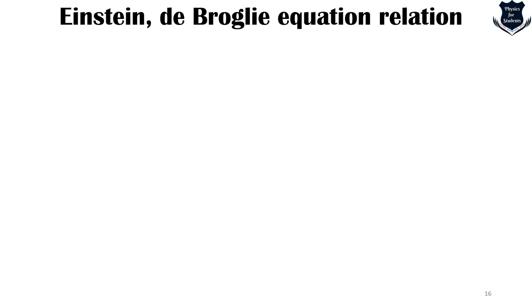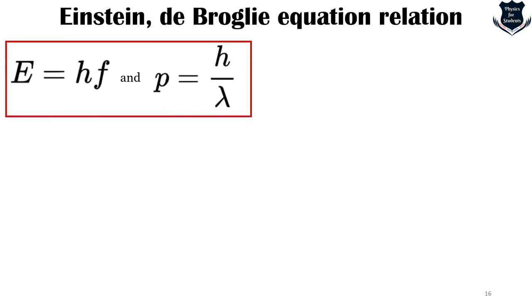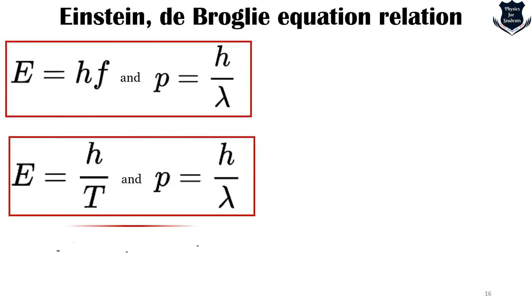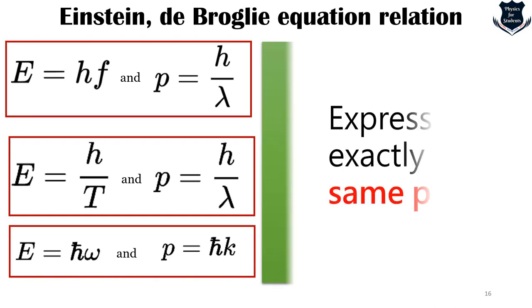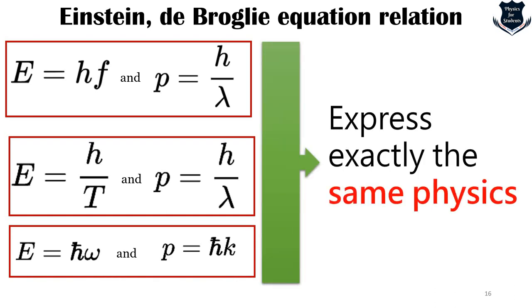What we get from here is that E equals hf, p equals h upon lambda, E equals h upon T, and E equals h bar omega, and p equals h bar k all express exactly the same physics.